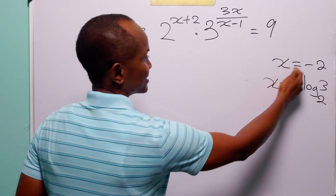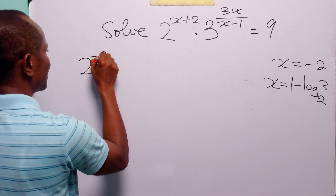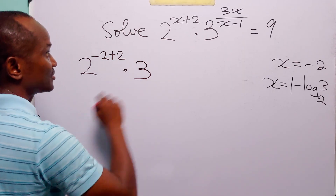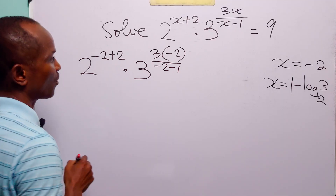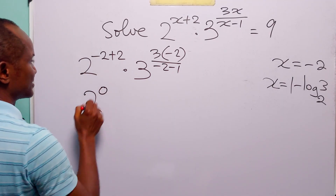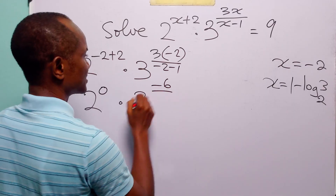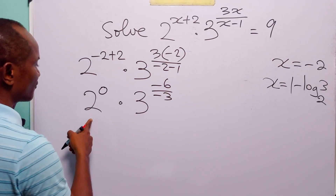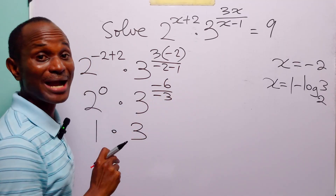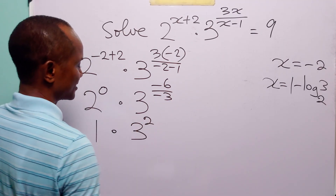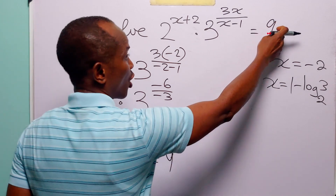Now to check our answer let us substitute x equal to minus 2 into the left hand side of this equation. We have 2 to the power minus 2 plus 2, which is equal to 0, multiplied by 3 to the power 3 times minus 2 is minus 6, over minus 2 minus 1 is minus 3. Of course 2 to the power 0 is equal to 1. So this is 1 multiplied by 3 to the power minus 6 divided by minus 3, which equals 3 squared. This is 1 times 9, which equals 9 — exactly what we have on the right hand side.